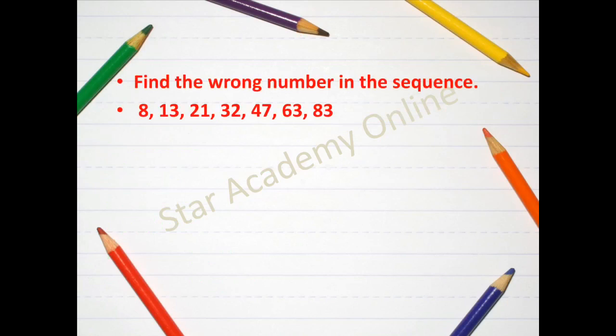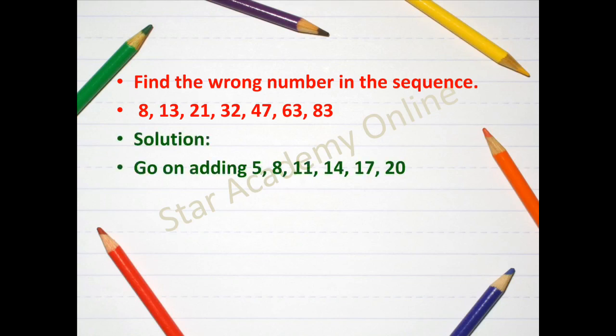Now another type of questions that we usually deal are the sequence or the series kind of questions. Now here for the first one, find the wrong number in the sequence. You can see that there is a sequence of numbers and it is increasing in its order. So 8, 13, 21 is increasing order which means that something is being added.